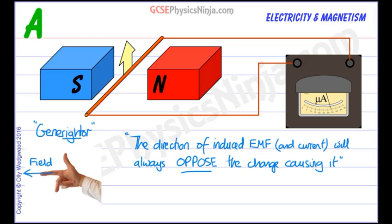The second finger is going to be our current, that's our induced current direction. And the thumb is motion. So the M in thumb stands for motion, first finger field, triple F, and current second finger. So the right hand, generator rule, helps us to work out the direction of the induced EMF and current.